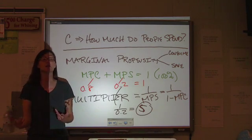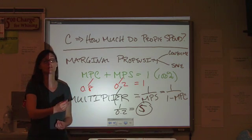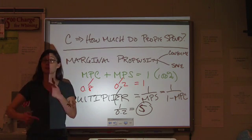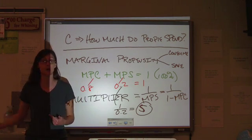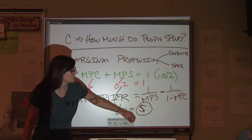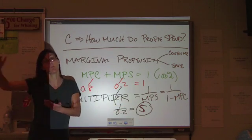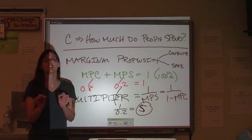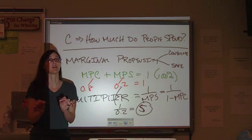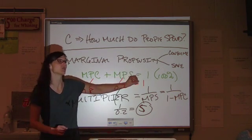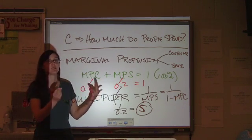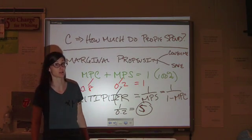Remember, velocity technically means the number of times the average dollar is spent over the course of a year. Money keeps moving. It keeps being re-spent until it's spent down to nothing. The multiplier is going to jump up that spending increase beyond the initial injection. A leakage takes money out of the spending stream. An injection puts it in, and that's a big difference if you're trying to enact policy.